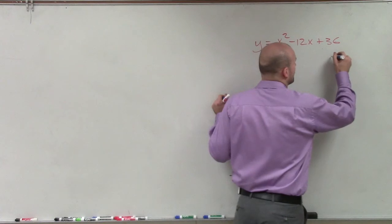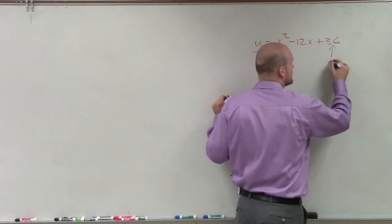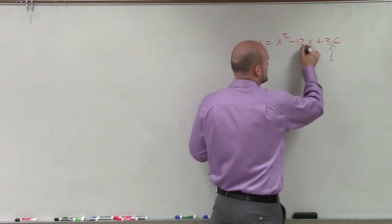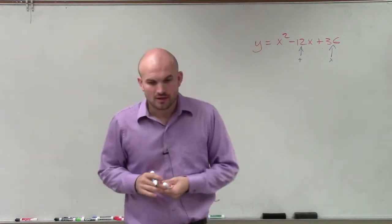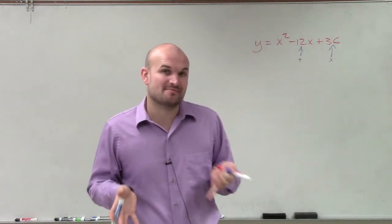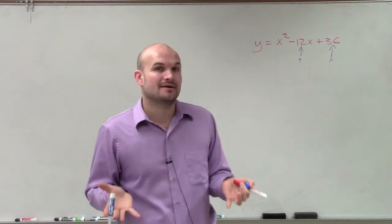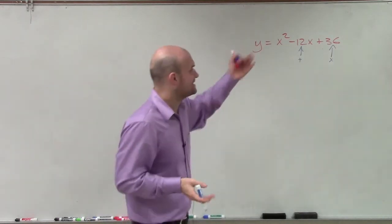What we want to do is determine what two factors of 36 multiply to give us 36, but then add to give us negative 12. When we notice that they're multiplying to give a positive 36, that means both factors have to be negative, and they're going to add to give us negative 12.